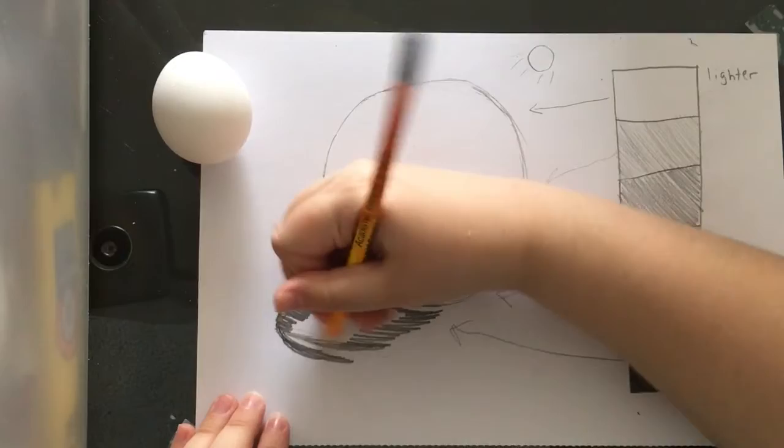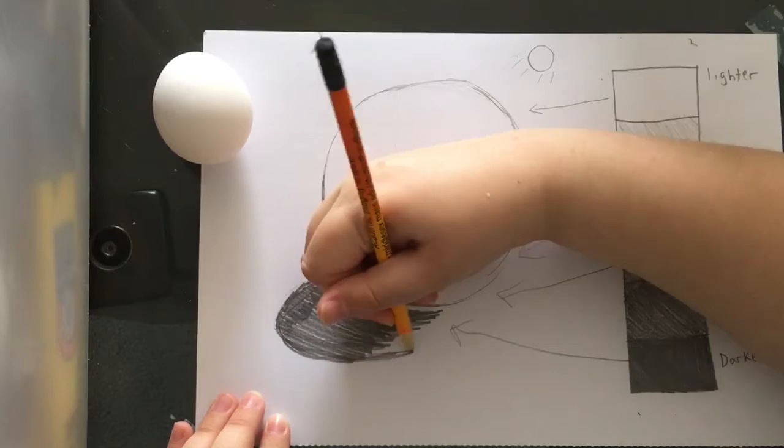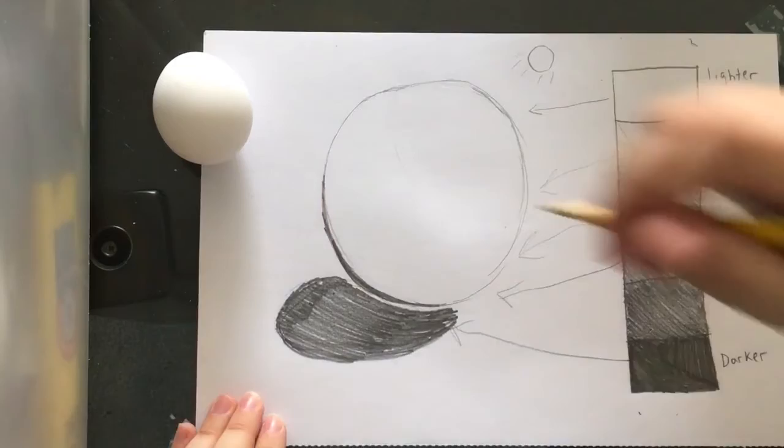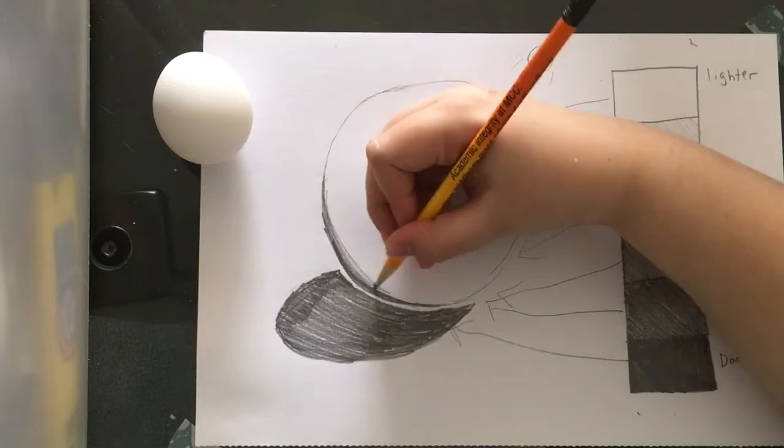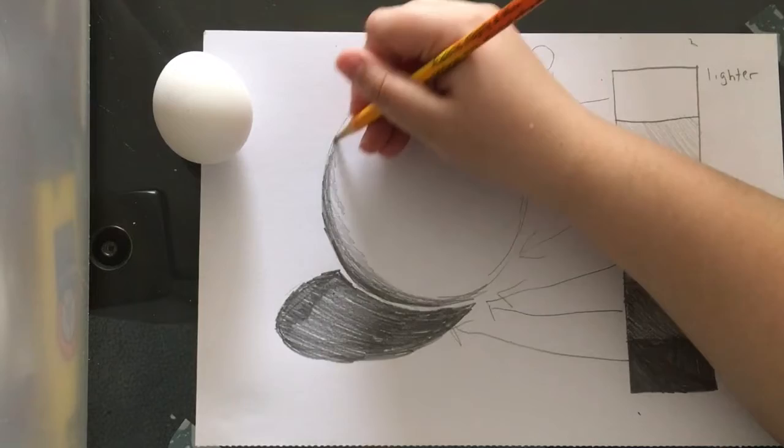You'll notice a shadow is always in the opposite direction of the light source. If you stand outside during sunset, if the sun's behind you, your shadow will be in front of you. If the sun's in front of you, your shadow will be behind. We are noticing that the darkest value is the drop shadow. The drop shadow is the shadow that's not on the object, it's cast by the object. Shadows can happen on an object, and they can happen around an object as a cast shadow.